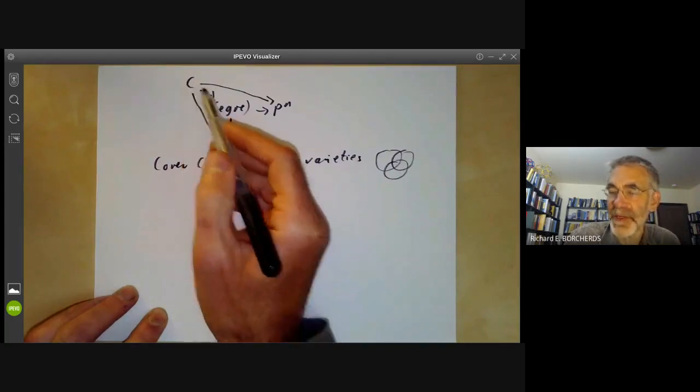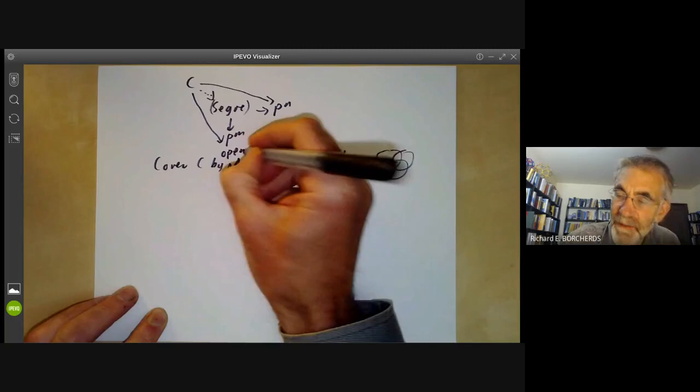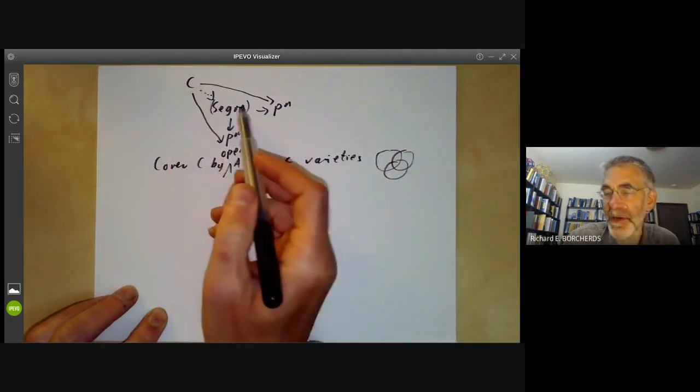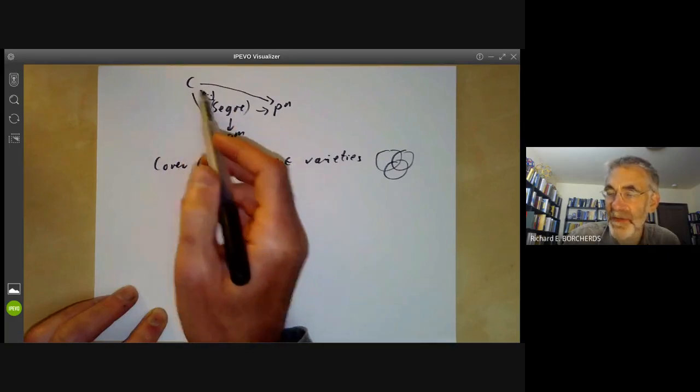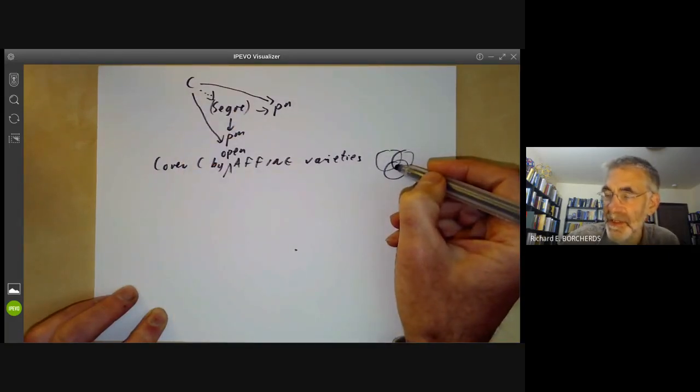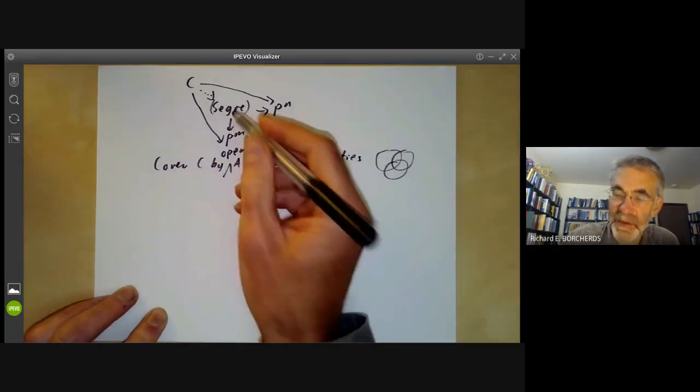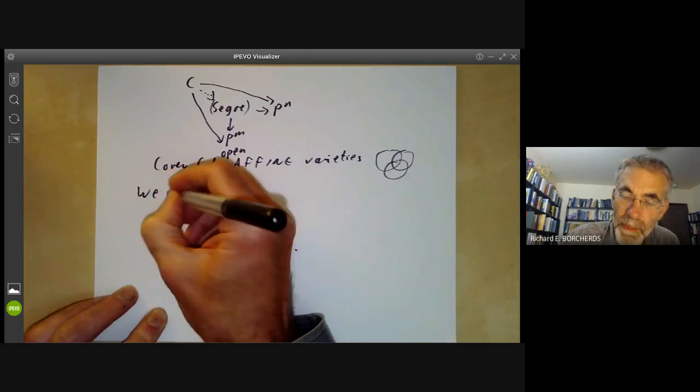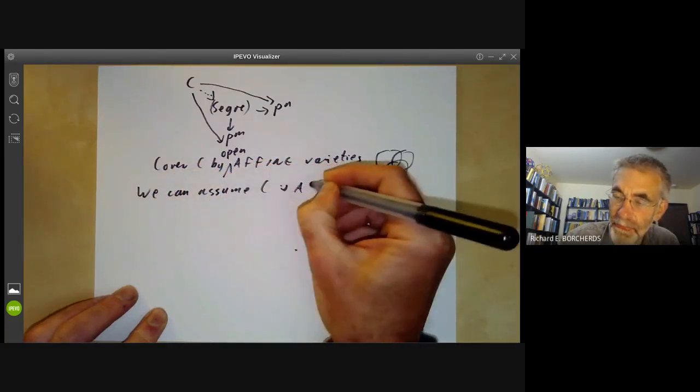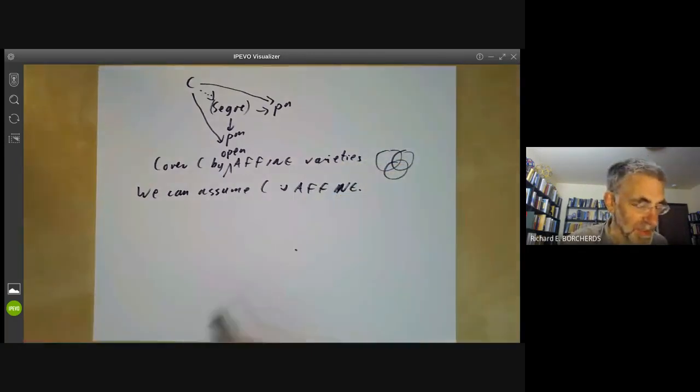Now, for each of these affine varieties, if we've proved this behaves like a product, this gives us a map from each of these open subsets, we get a map to the Segre embedding. And by the uniqueness of the map for the product, these must coincide in all the intersections. So we get a map from the whole of C to the Segre embedding. So we can assume that C is affine, which makes life a bit easier.